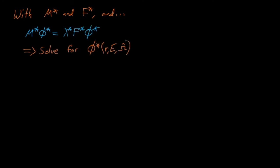So having done all this, we now have an expression for m-star, the adjoint neutron loss operator, and f-star, the adjoint neutron production operator. The very last term to discuss is the adjoint eigenvalue, lambda-star. The adjoint eigenvalue is actually identical to the forward eigenvalue — in fact, proving that these two are equal will be a question on one of your homework assignments.